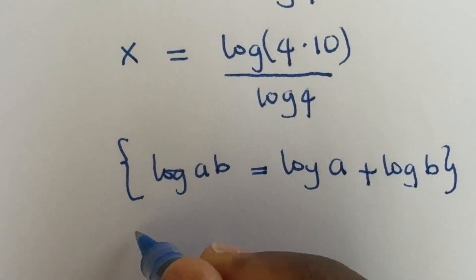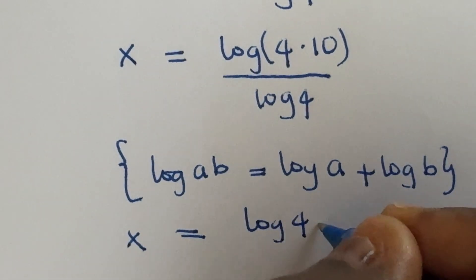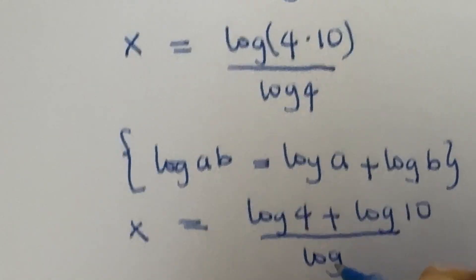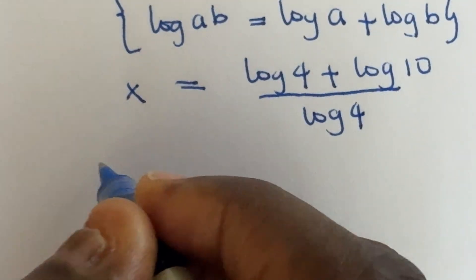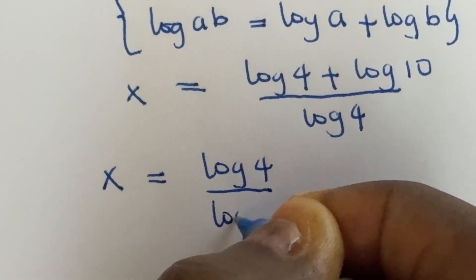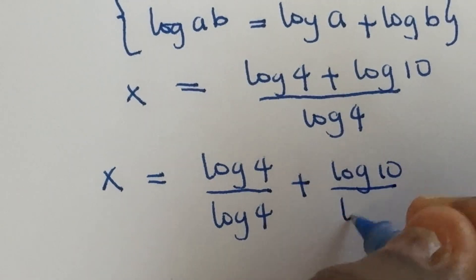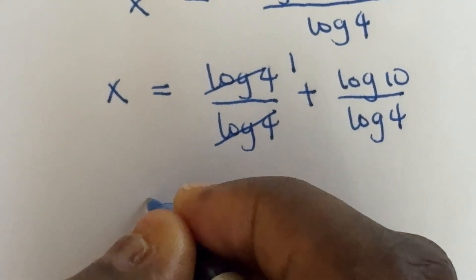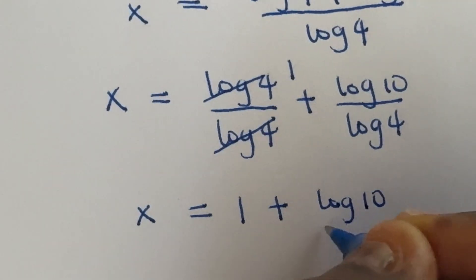Therefore x is equal to log 4 plus log 10, divided by log 4.